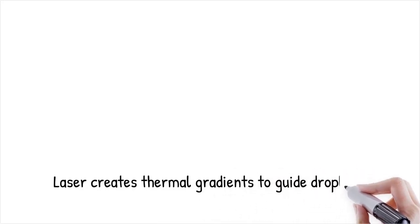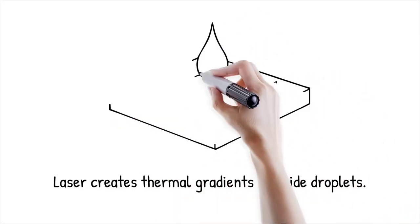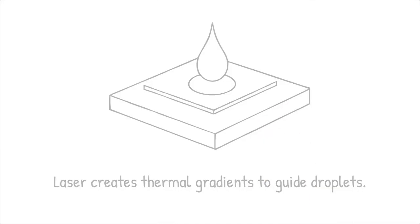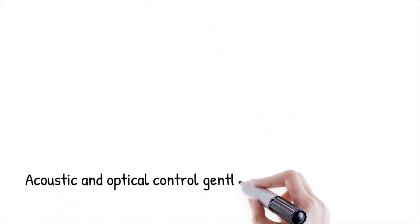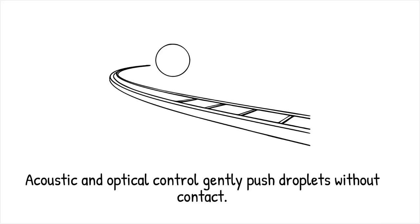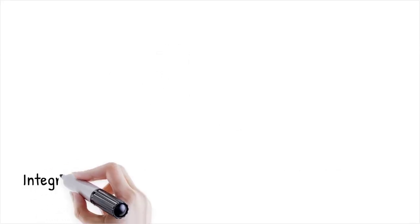A laser beam is used to create a localized thermal gradient that guides a droplet to a reaction area on a microfluidic chip. Acoustic and optical control are like using sound vibrations or a spotlight to gently push a small ball along a track without touching it.